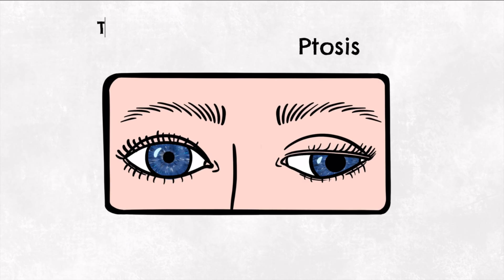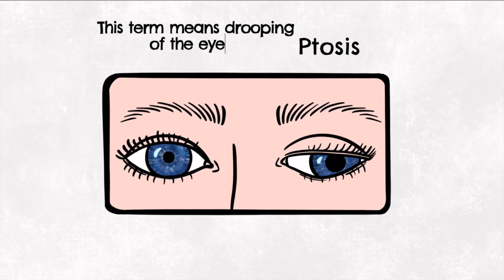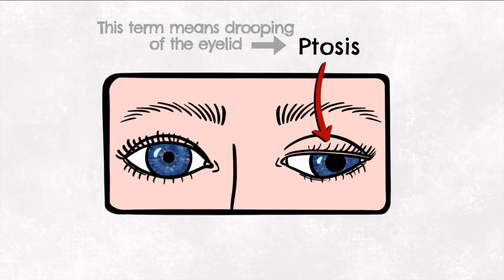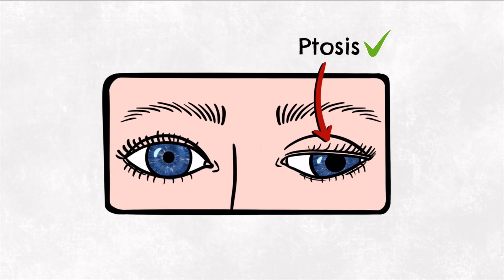First of all we've got a drooping eyelid known as a ptosis, and this is because the oculomotor nerve innervates the muscle of the eyelid, levator palpebrae superioris. When that innervation is lost, the muscle ceases to function, and so the opposing muscle, orbicularis oculi, is the only muscle working on the eyelid, causing depression of the eyelid. The orbicularis oculi is innervated by the facial nerve.